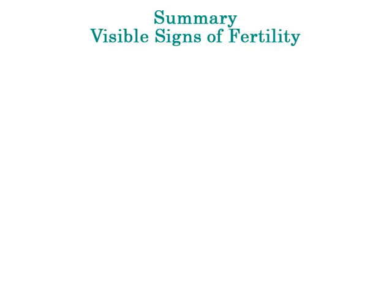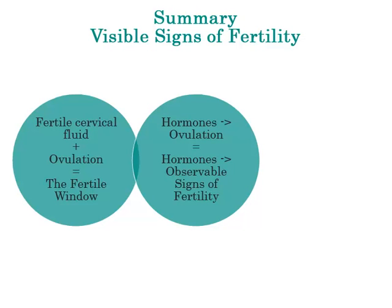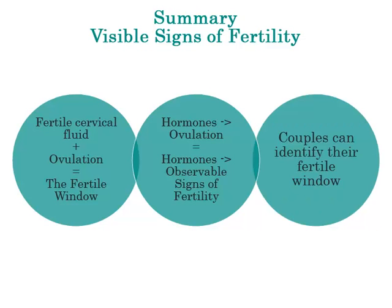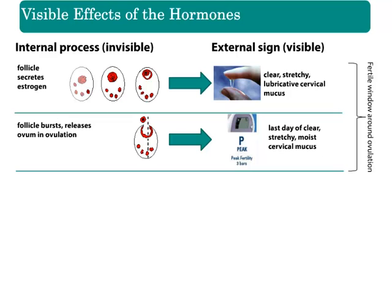In summary, cervical mucus and ovulation together define the fertile window. The same hormones that control ovulation also modulate the observable signs of fertility, and a couple can determine the fertile window and use it according to their family planning goals. During the follicular phase, a developing follicle secretes estrogen, causing the cervix to produce clear, stretchy, egg-white-like fluid — a sign of fertility because it allows sperm to live in the cervix awaiting the ovum. An LH spike causes the follicle to open and release the ovum, resulting in ovulation. Some women experience sharp lower abdominal pains known as Mittelschmerz at this time.